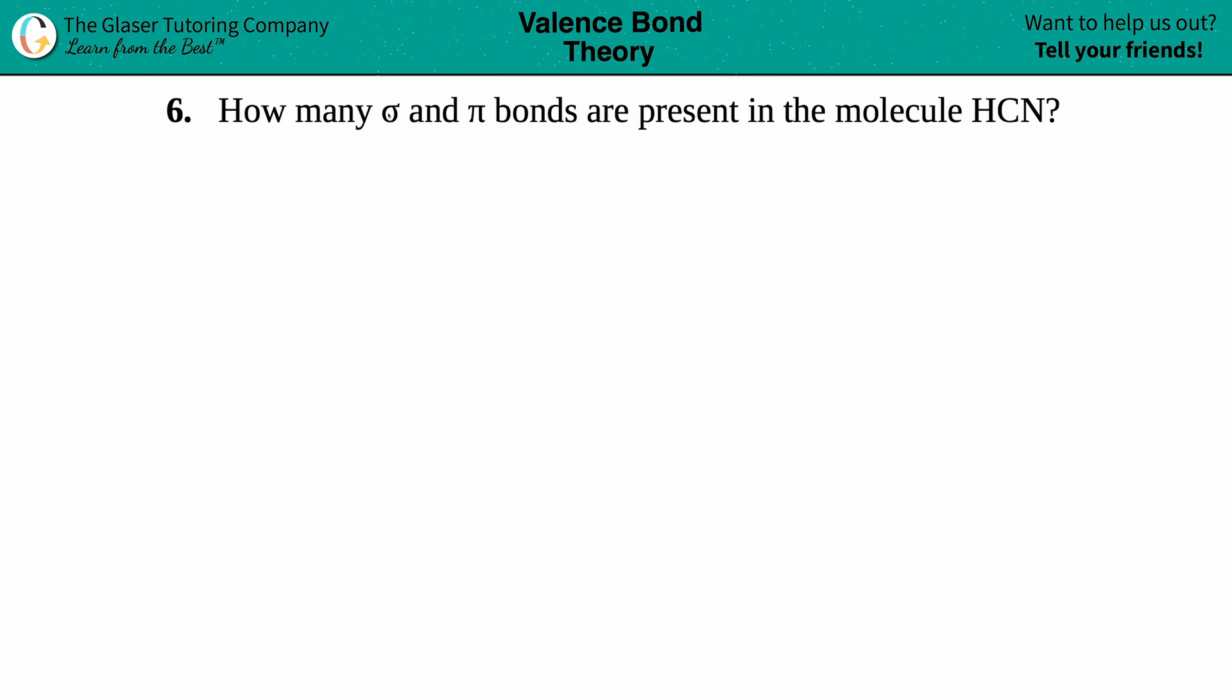Number six: how many sigma and pi bonds are present in the molecule HCN? Okay, so first things first, just know these symbols. This symbol is always said as a sigma bond, and this we've seen in math class - those are your pi bonds. So we're just talking about specifically sigma and pi bonds present in HCN.